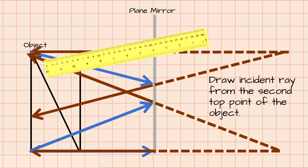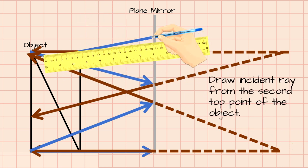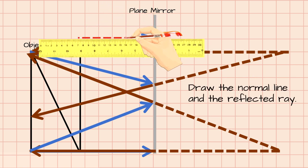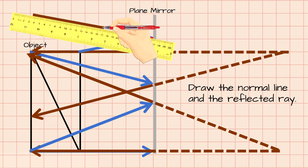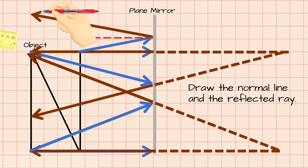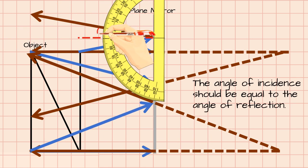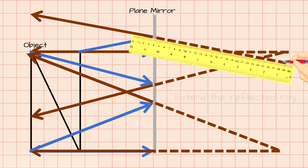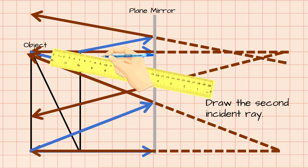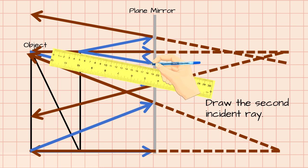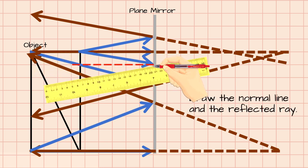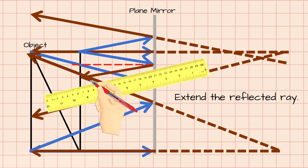Draw an incident ray from the second top point of the object. Draw the normal line and the reflected ray. Make sure that the angle of incidence equals the angle of reflection. Extend the reflected ray. Draw the second incident ray. Draw the normal line and the reflected ray. Extend the reflected ray.